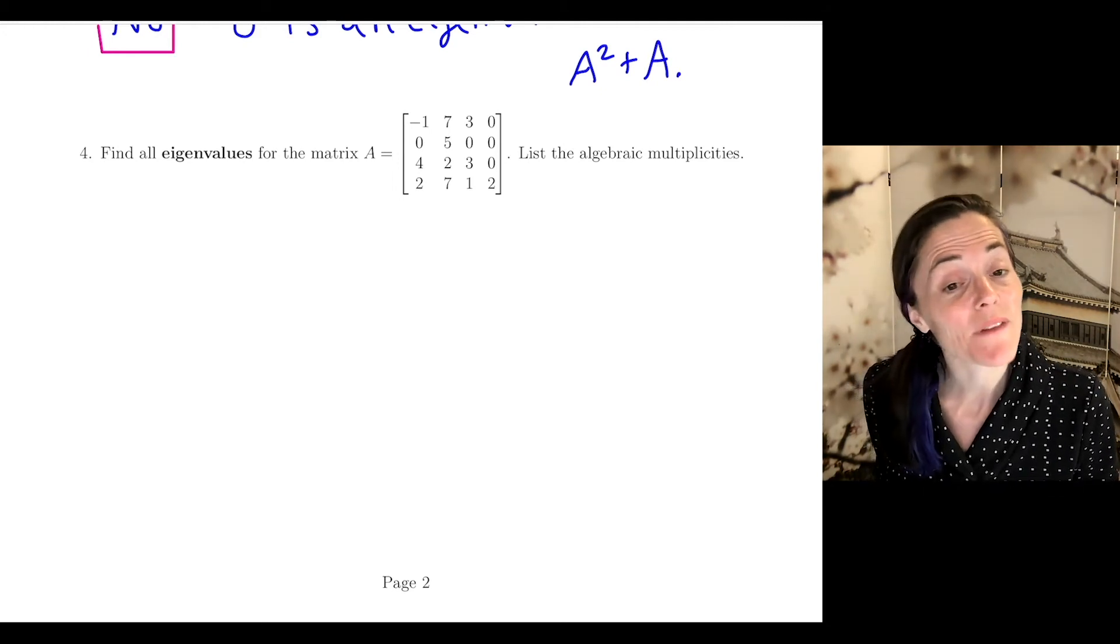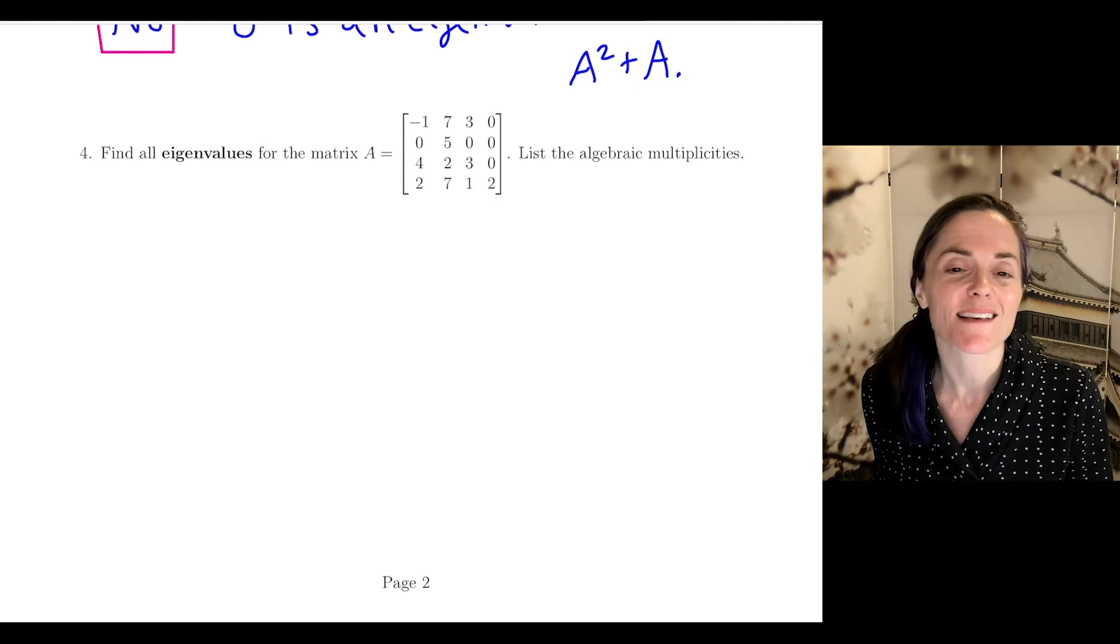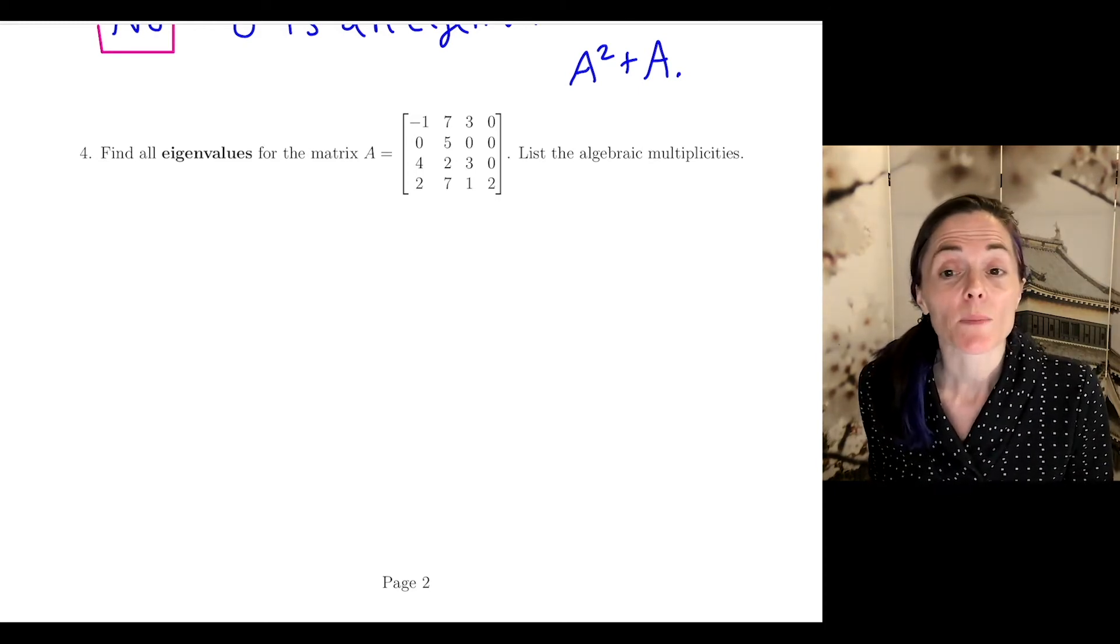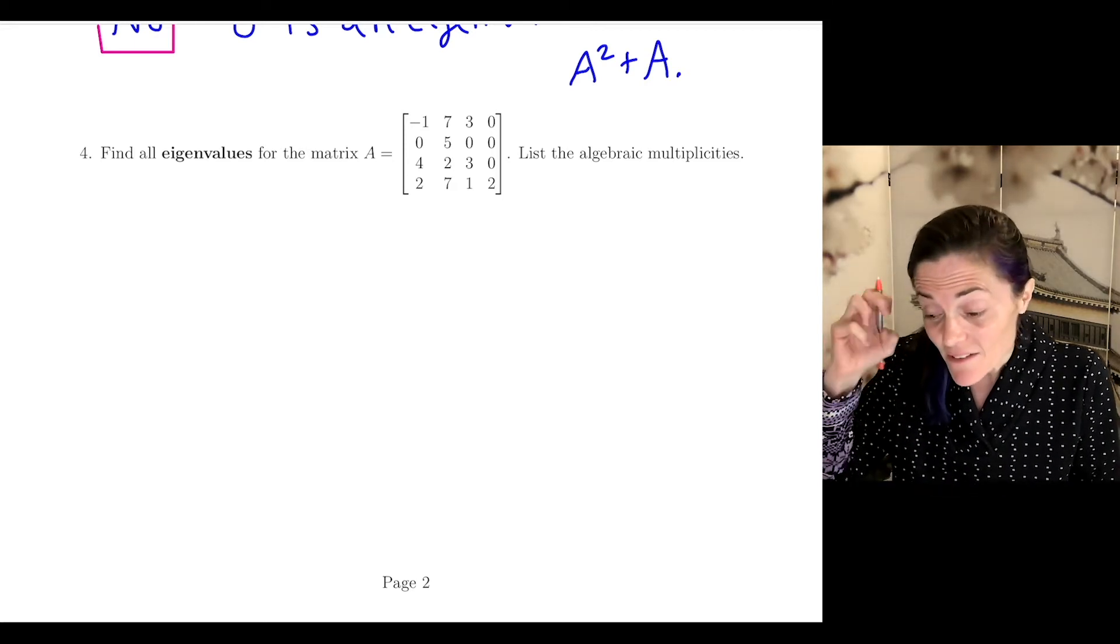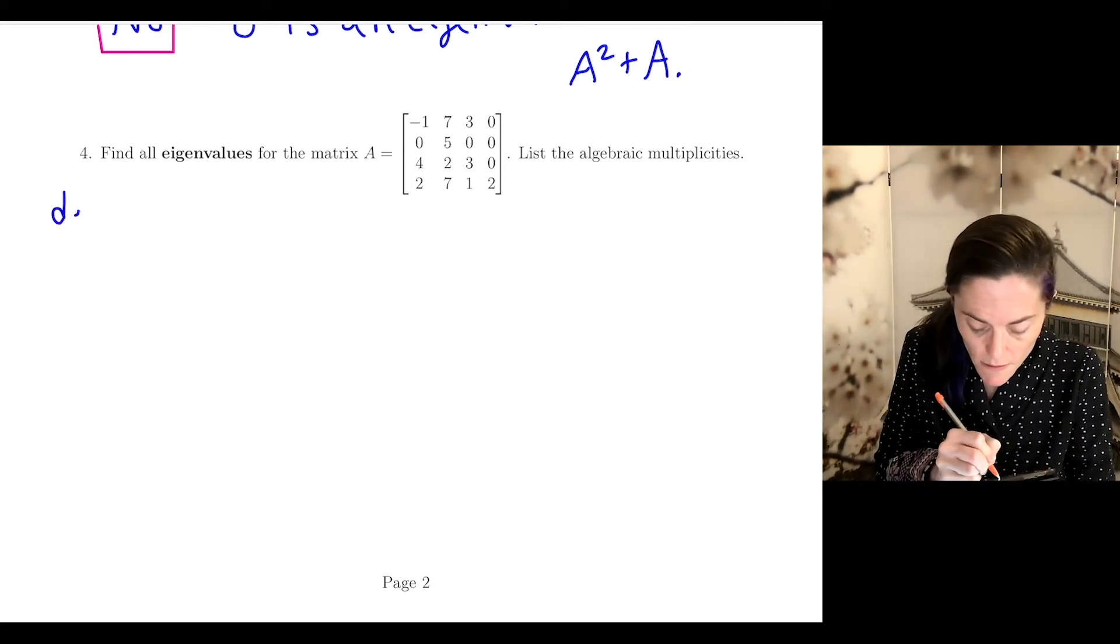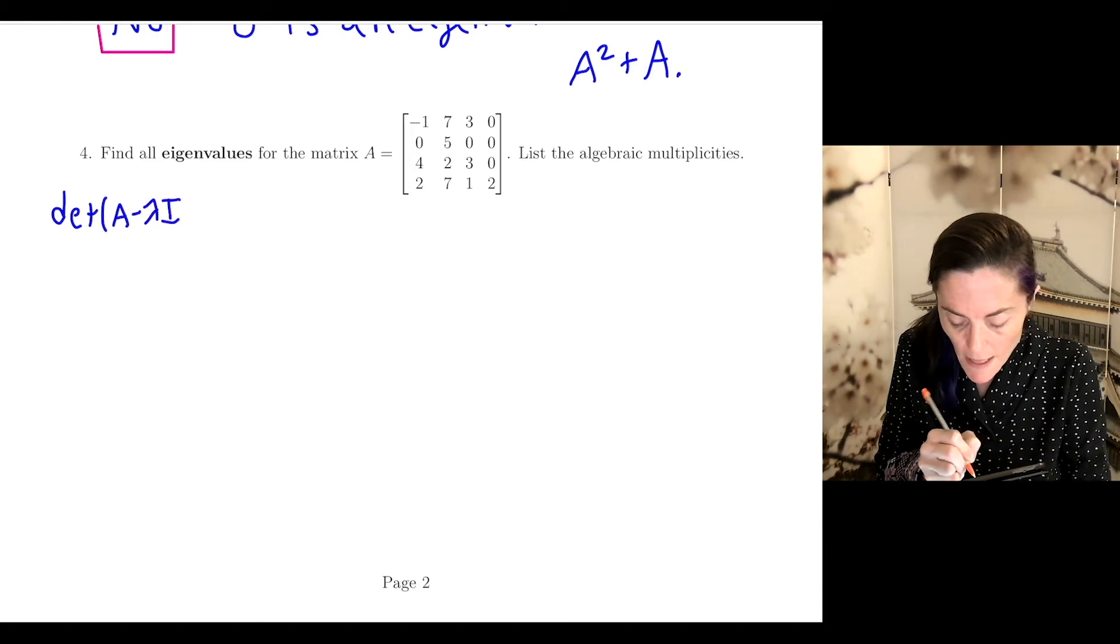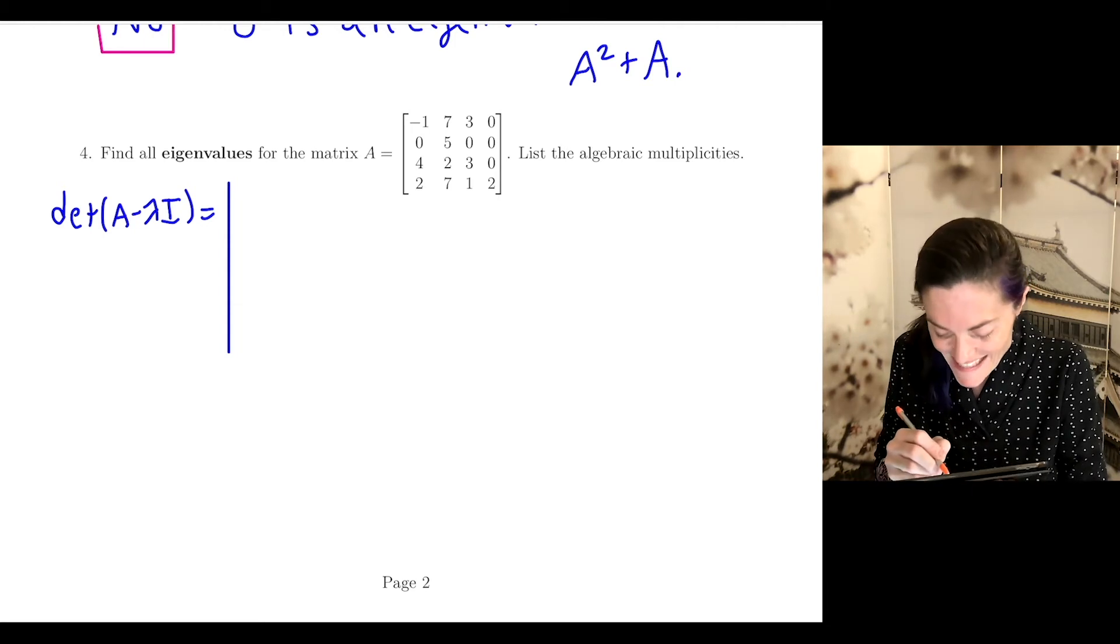Number 4: we want to find all eigenvalues for the matrix A. You see A is 4 by 4, and then list their algebraic multiplicities. This will be fun. Finding eigenvalues is a determinant calculation. So we begin with the determinant of A minus lambda I.